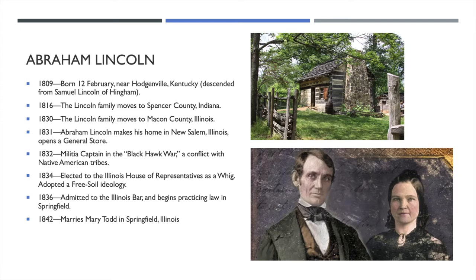In 1832 he served briefly as a militia captain in the Black Hawk War, a conflict with Native American tribes on the frontier near the Mississippi River. In 1834, Lincoln was elected to the Illinois House of Representatives as a member of the Whig Party, and it was then that he adopted the Free Soil ideology. The Free Soil position was not an abolitionist position. Free Soilers thought the federal government had no authority to interfere with slavery where it already existed, but had both the power and obligation to prevent its spread into new territories.